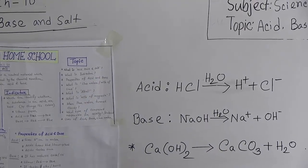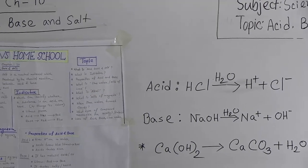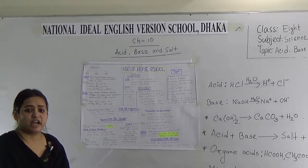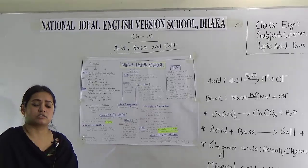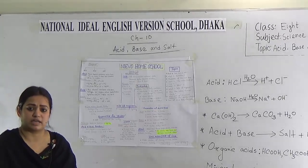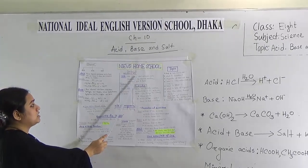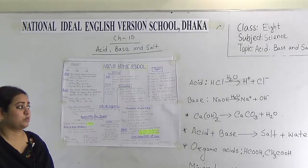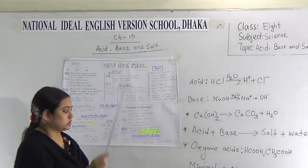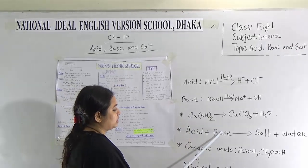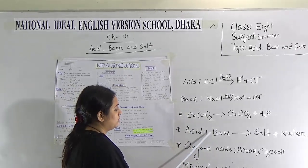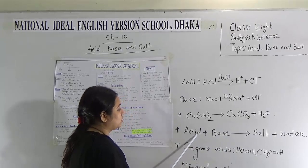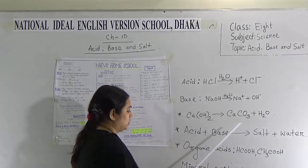Now the third topic is what is salt. Salt is a neutral material — that means it is neither basic nor acidic. Salt is produced by a chemical reaction between an acid and a base. That means when acid and base react together, they produce salt. This is also called an acid-base reaction.